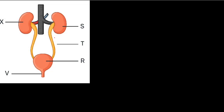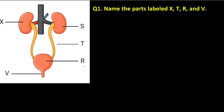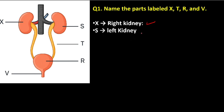Here we have the first diagram. Do you know the name? You can see we have some letters: X, S, T, R, and V. The first question is about naming — name the parts labeled X, T, R, and V. X is known as the right kidney. What about S? S is called the left kidney. Most students call X the left kidney and S the right kidney — note that the left is to the right and the right is to the left when you have a diagram like this. So S is the left kidney and X is the right kidney.